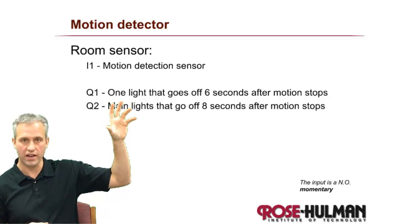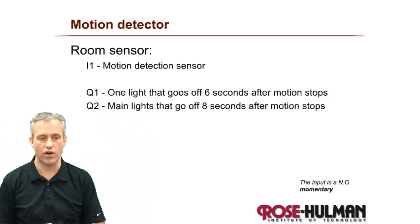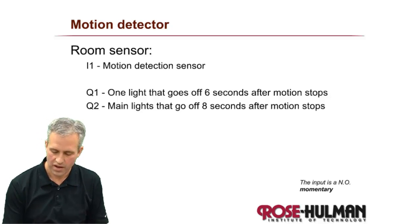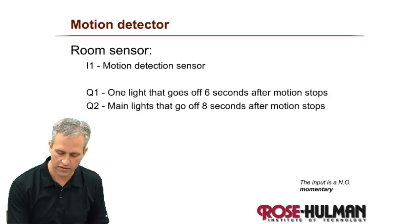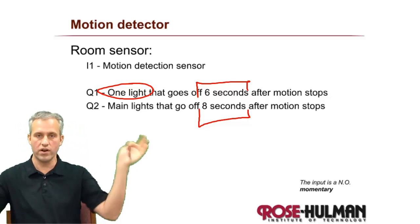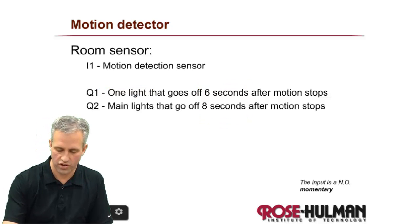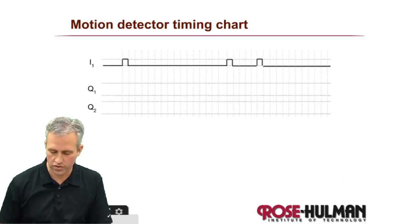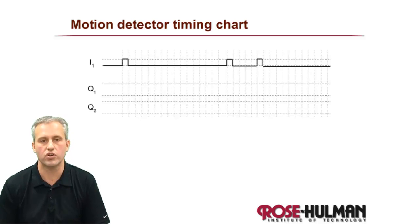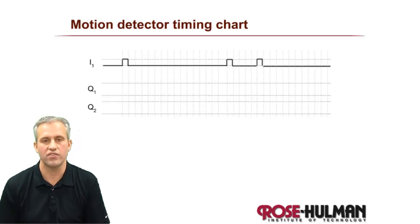We're adding a feature: before all the lights go into complete darkness, one warning light goes off first — a warning that you should move, or else all lights will go out. I1 is the motion detection sensor. Q1 is the warning light. We'll use six seconds instead of 20 minutes, with a two-second window to wave your arms before the lights turn off.